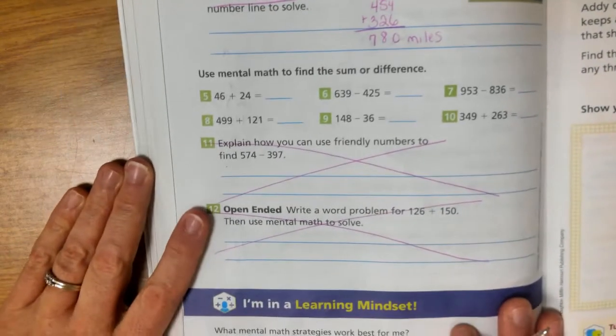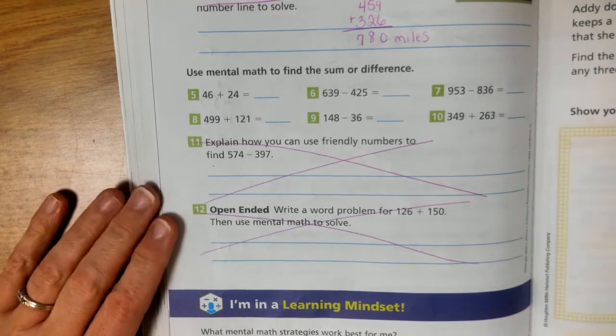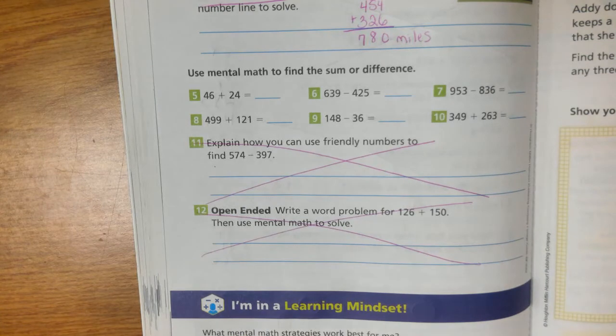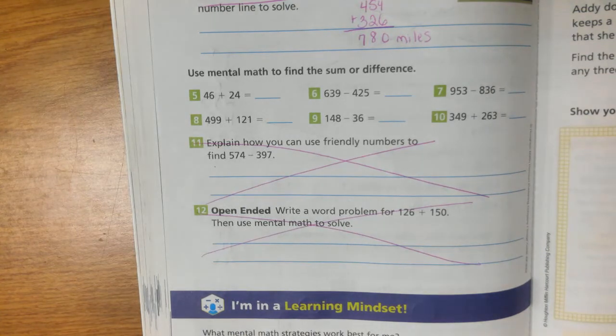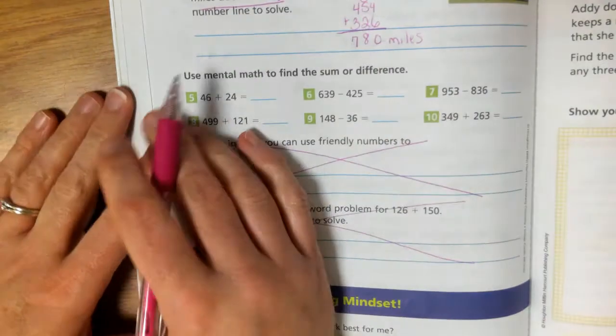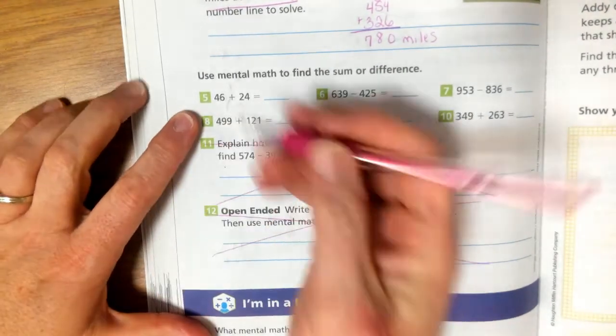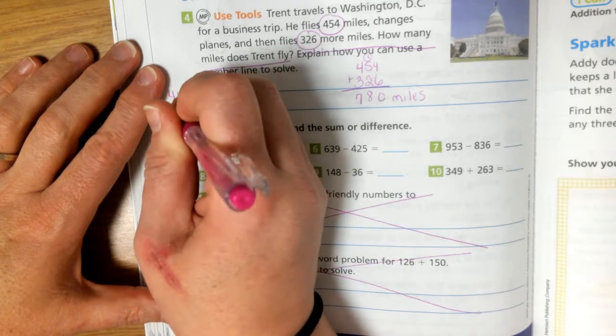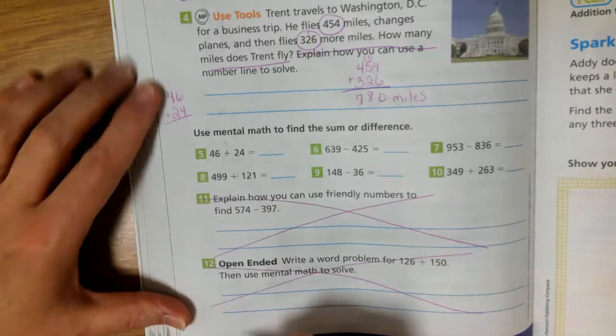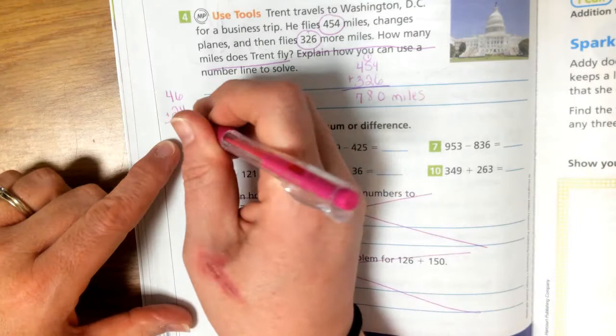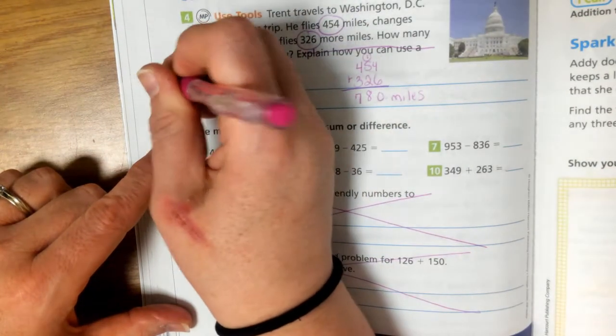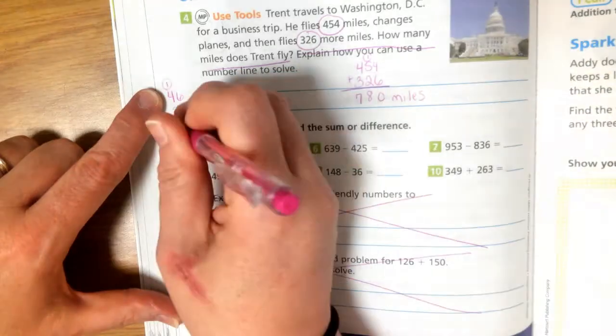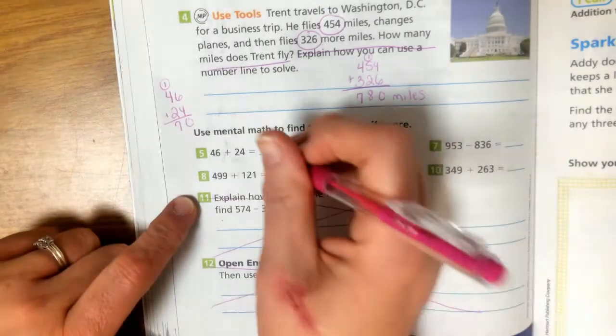Now we're going to do some more addition and subtraction. You can just do it off to the side or if you want to do it on another sheet of paper, a sheet of lined paper, that works as well. Or non-lined paper. So 46 plus 24. So I'm just going to come up here where there's some blank space. 46 plus 24. 6 plus 4 is 10. Regroup of 1. 4 plus 2 is 6 plus 1 is 7. So we have 70.